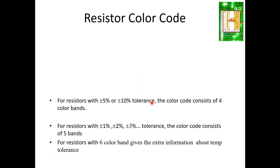Resistors with a tolerance of 5% or 10% generally consist of a four color band. Resistors with 1%, 2%, 3%, or similar tighter tolerances consist of a five color band. There are also six color band resistors, which are similar to five-band resistors but provide additional temperature coefficient information as the extra sixth band.